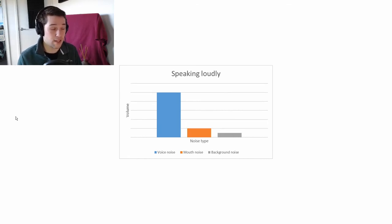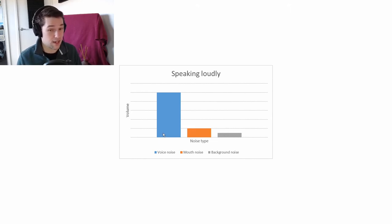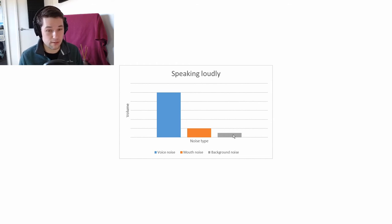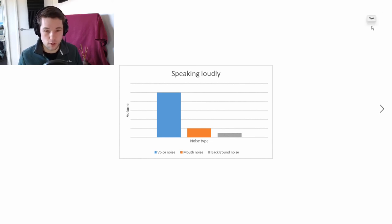When you're speaking loudly, the sound of your voice is much louder, but the noises created by your mouth stay the same as before — because those noises don't get louder as you speak louder. The room noise is also the same. So you can turn down the gain on your audio interface or USB microphone, which means all those other sound sources compared to your voice will actually be lower, giving you a much better recording quality overall.